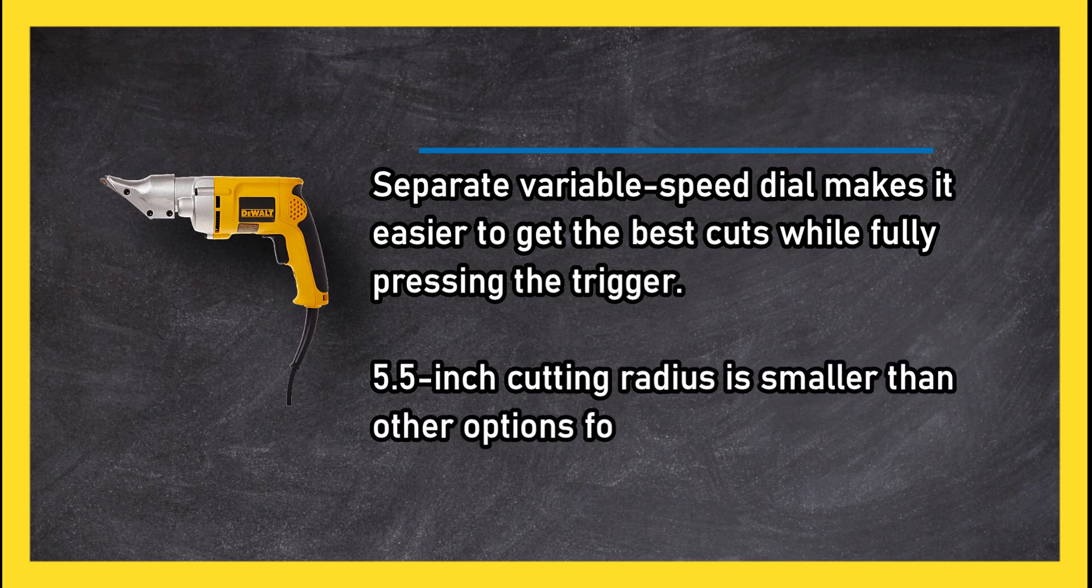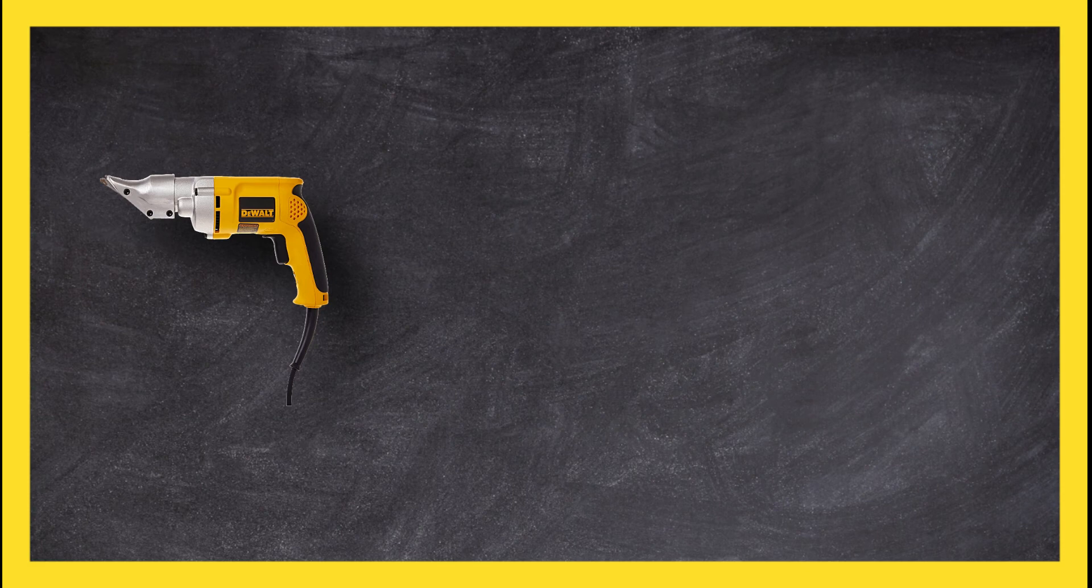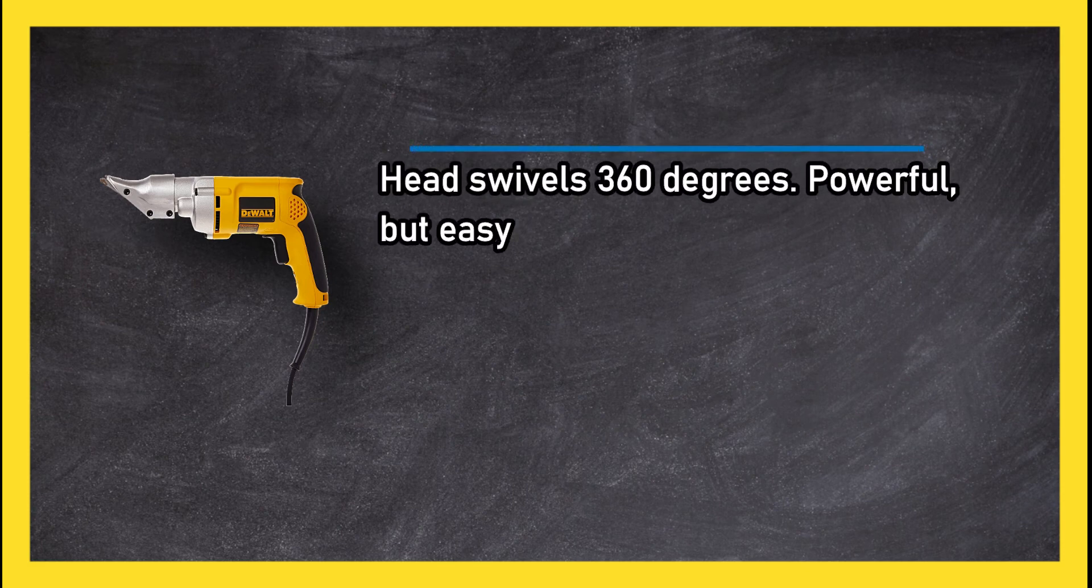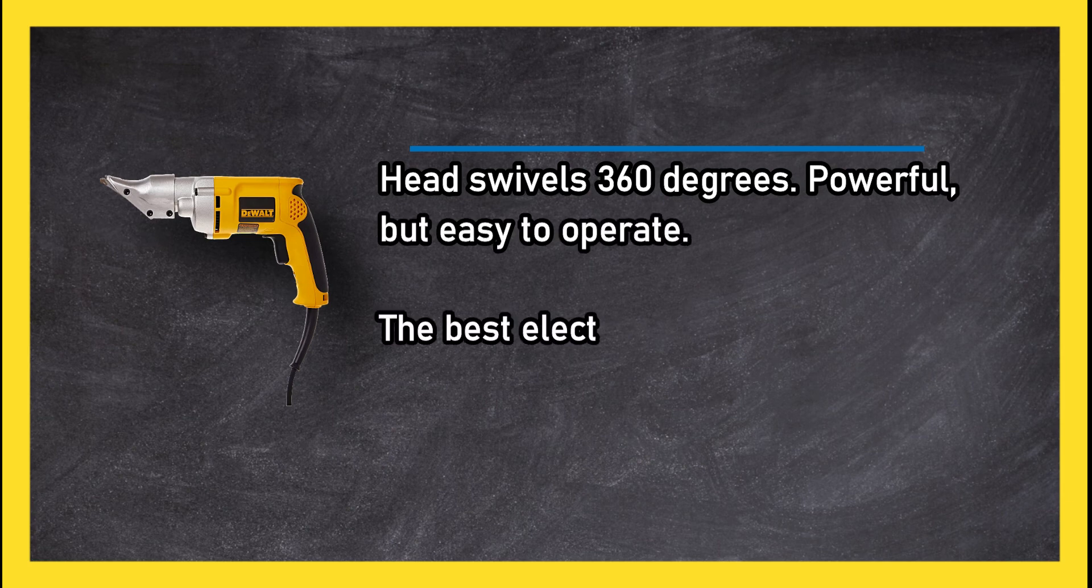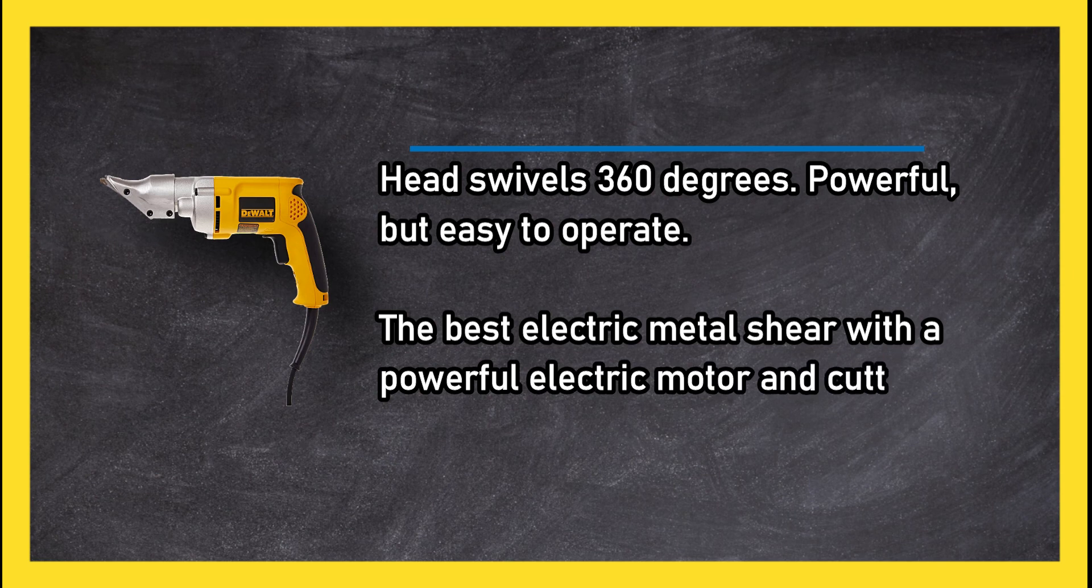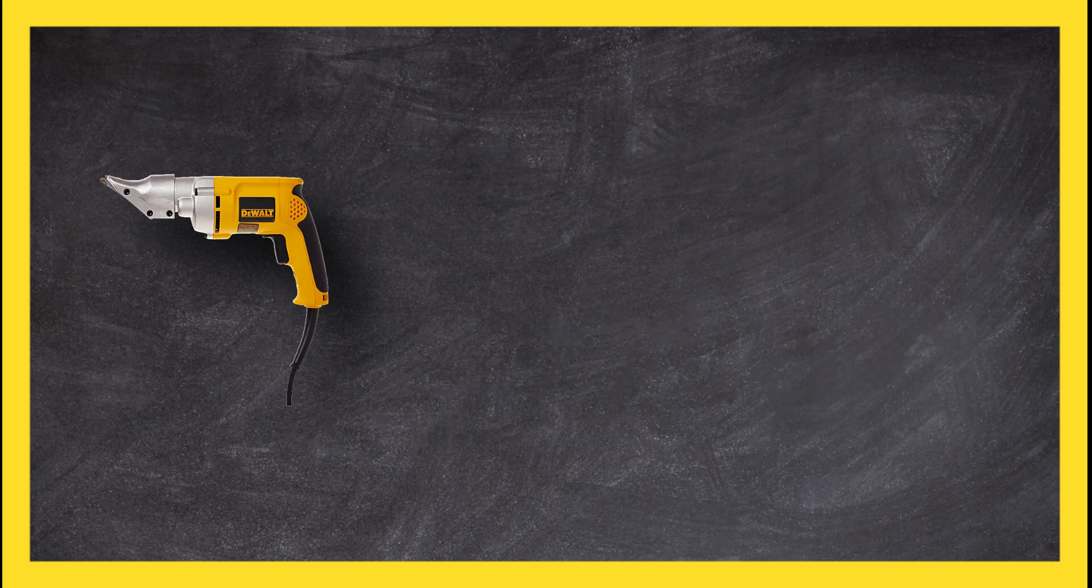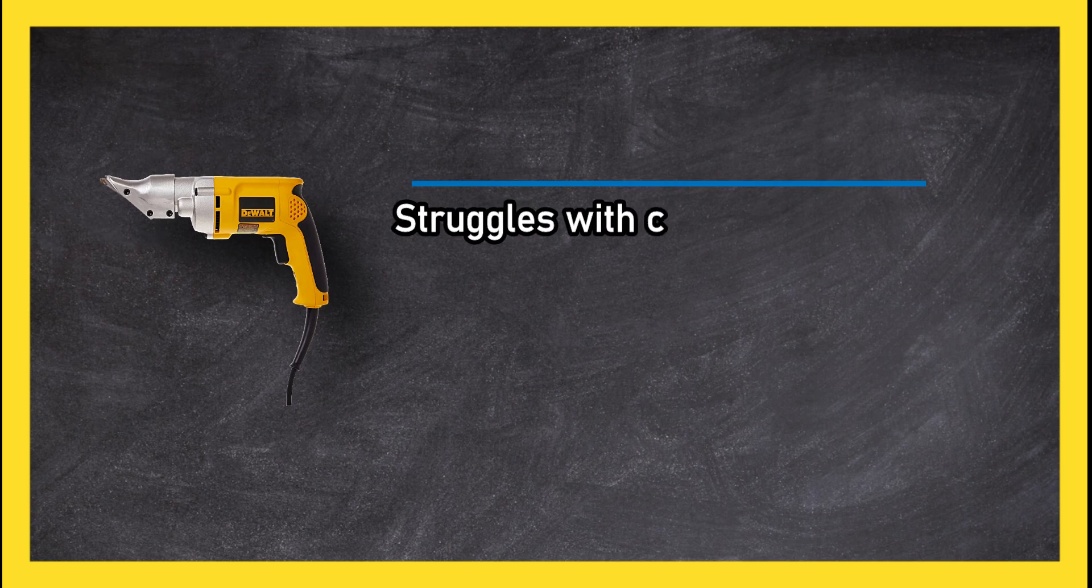Head swivels 360 degrees. Powerful but easy to operate. The best electric metal shear with a powerful electric motor and cutting head. Struggles with cutting curves and corners on metal thicker than 18 gauge steel.